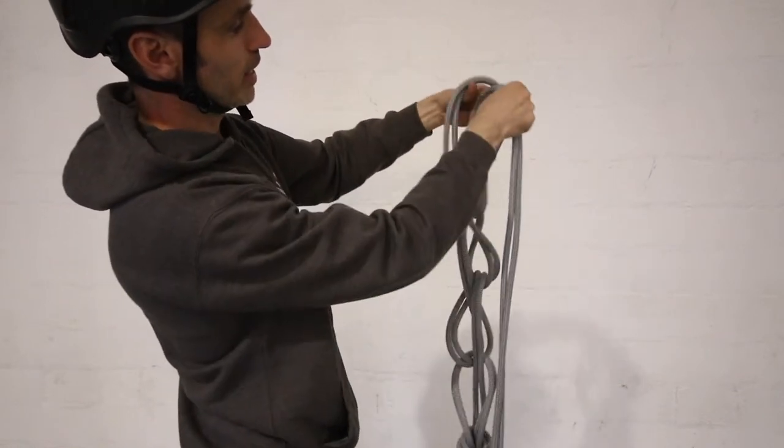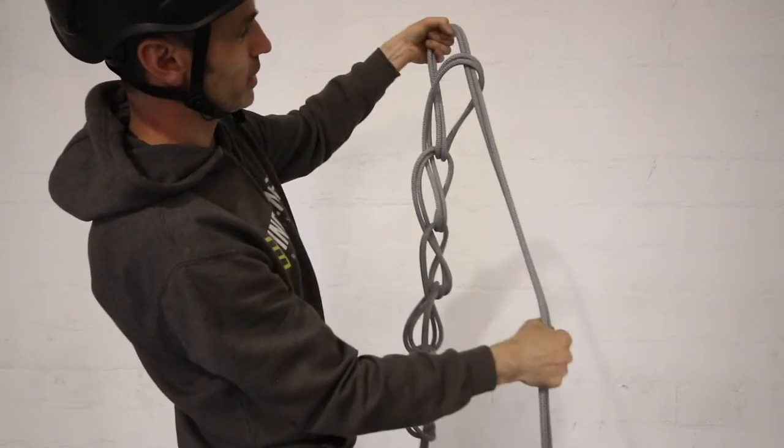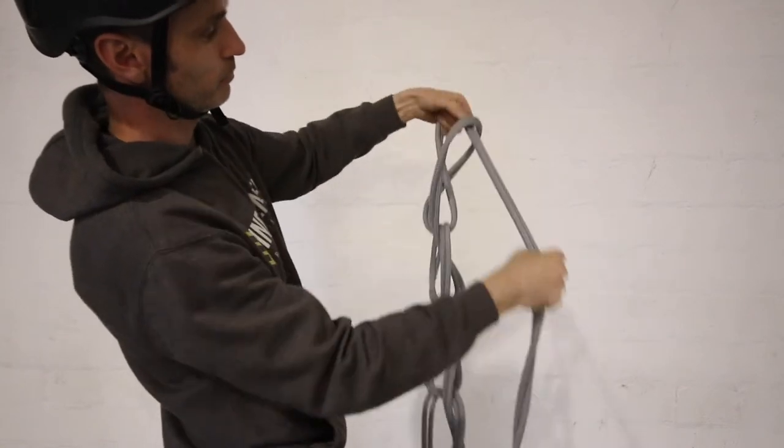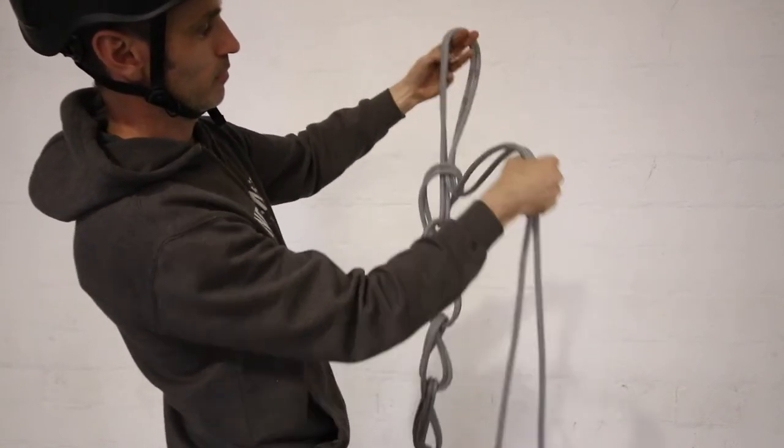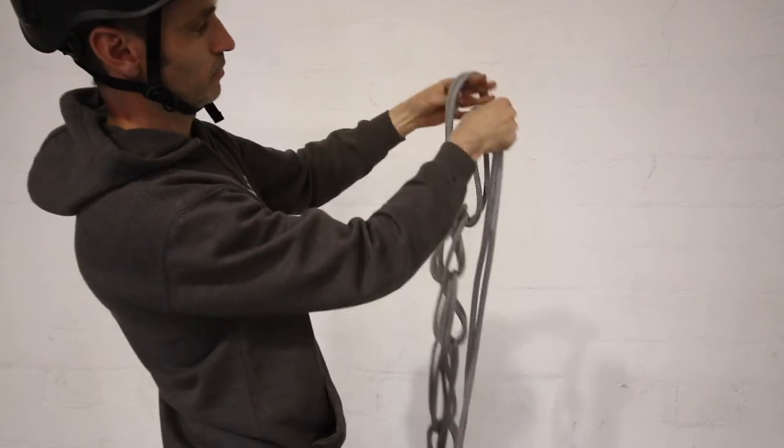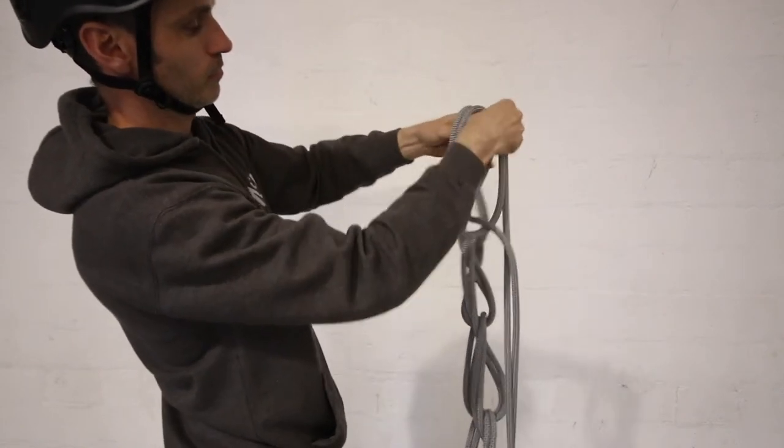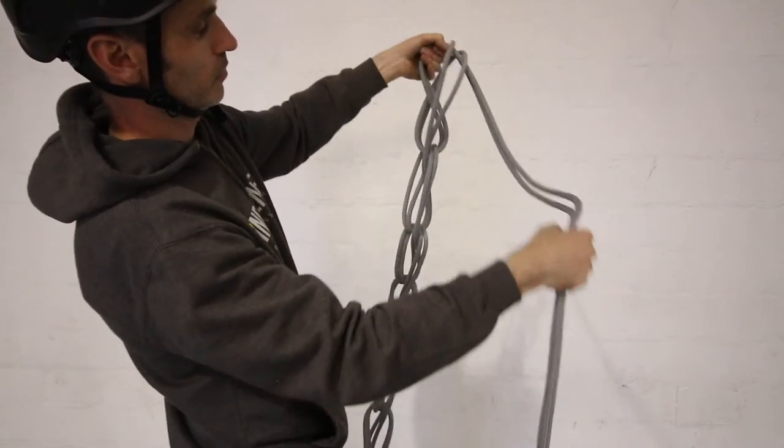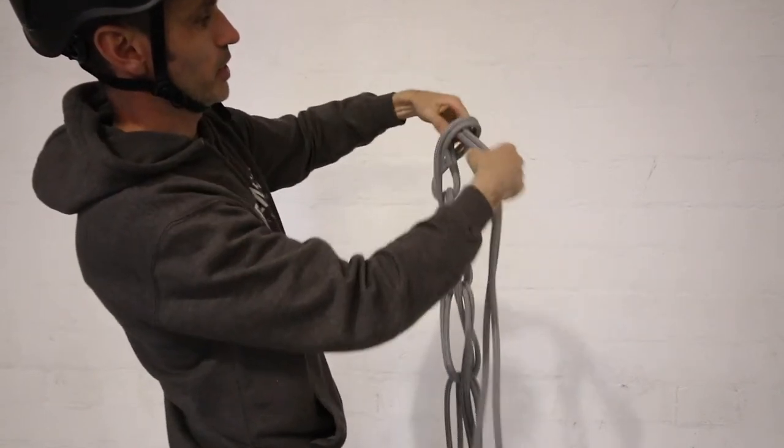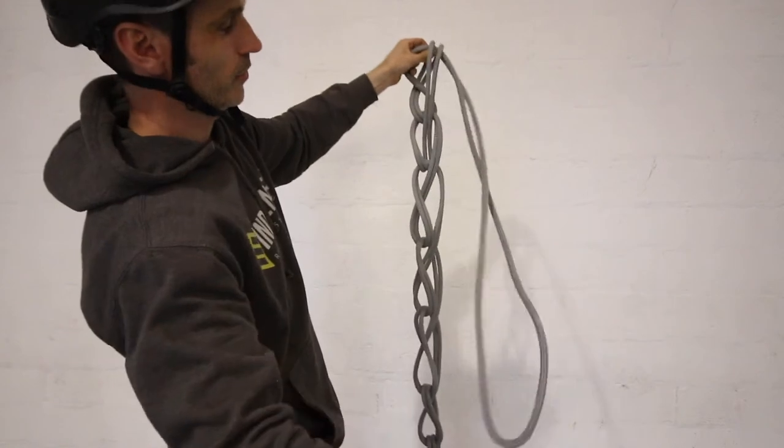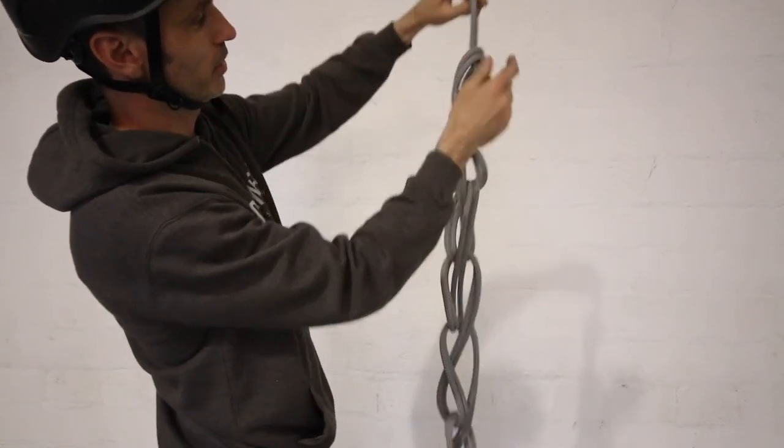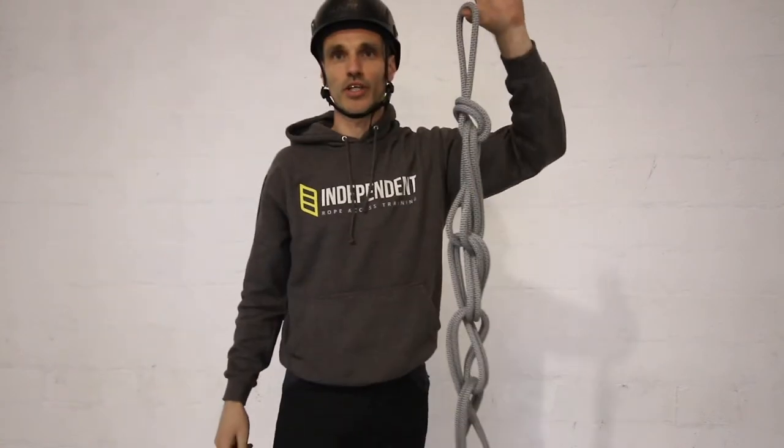Continue until you get to the end of the rope. Keep sliding your hand down, putting the other one through the loop every time ready to grab. When you get to the end, it basically finishes itself. You go through there and that's you chained up your rope.